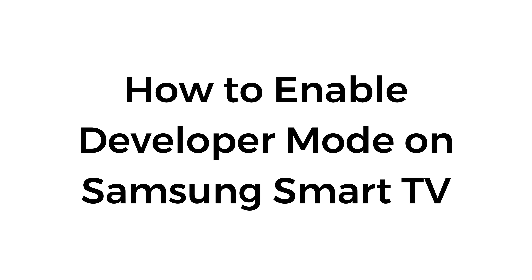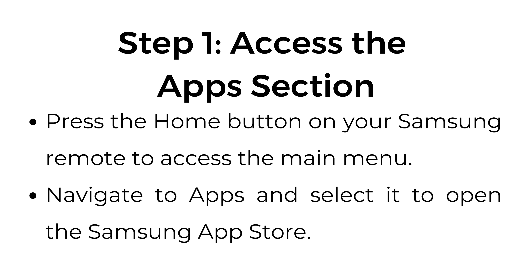How to enable developer mode on Samsung Smart TV. Step number one: access the apps section. Press the home button on your Samsung remote to access the main menu. Navigate to apps and select it to open the Samsung app store.